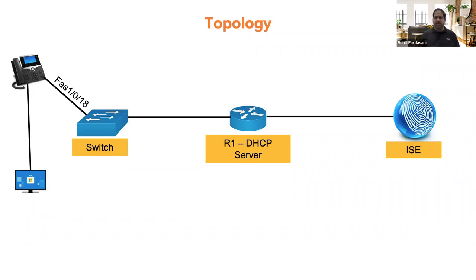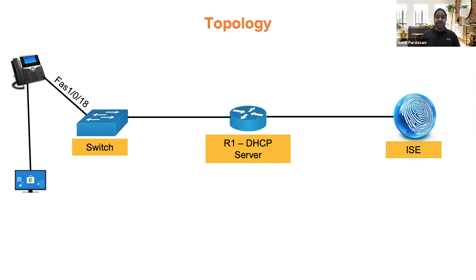Here is the lab topology — a pretty straightforward small topology. I have one Windows machine connected behind the IP phone, and the phone connects to the switch on port FastEthernet 1/0/18. The link between switch and router one is a Layer 3 port. Router one has been pre-configured as a DHCP server, so it will send IPs to both the phone and the PC. ISE connects to router one.